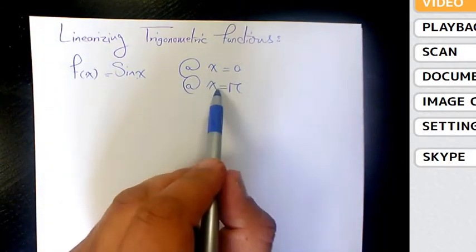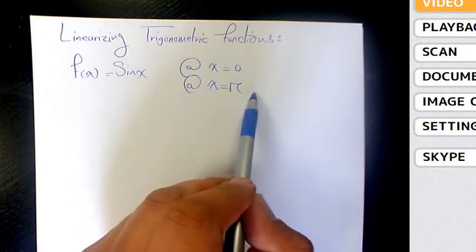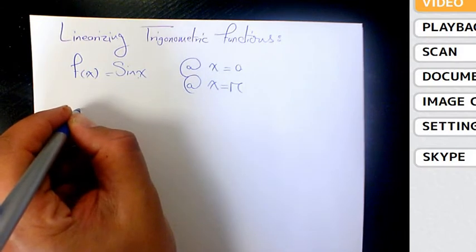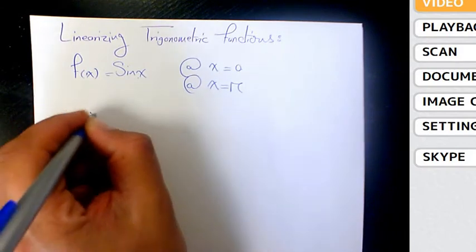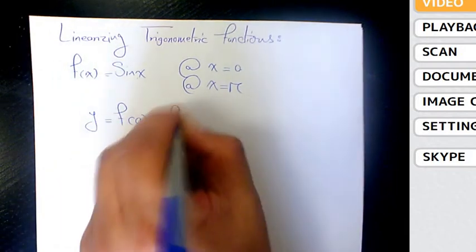We need to do it at two different points. One of them x = 0, the other one x = π. So we have the formula: y = f(a) + f'(a) times (x - a).